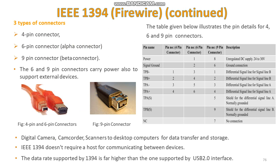IEEE 1394 connectors consist of TPA, TPB+, TPB-, power, and signal ground. There are two differential data transfer lines, A and B, per connector. Normally the differential lines of A are connected to B — that is, TPA+ to TPB+ and TPA- to TPB- and vice versa.